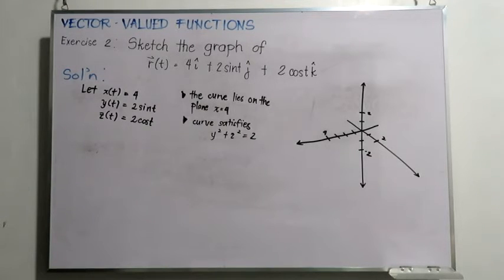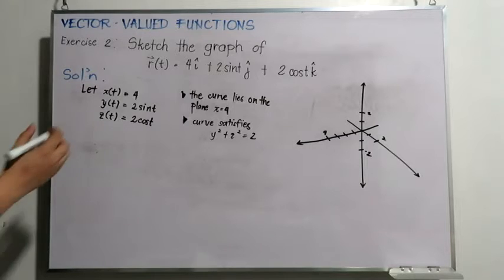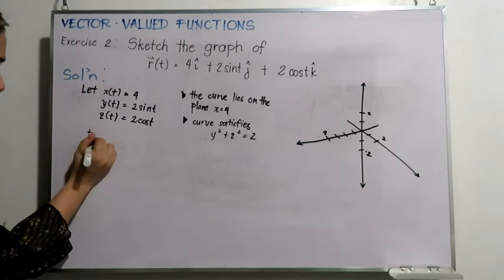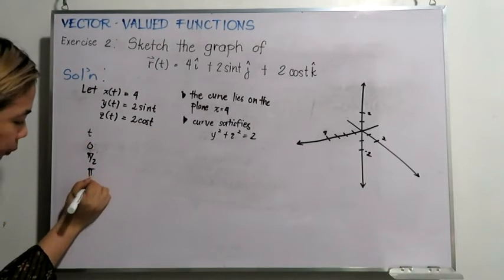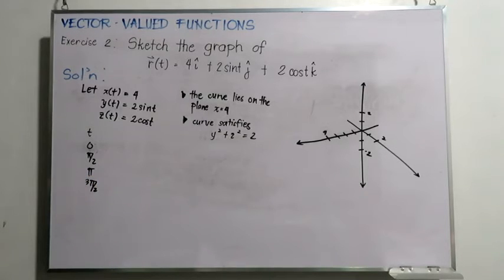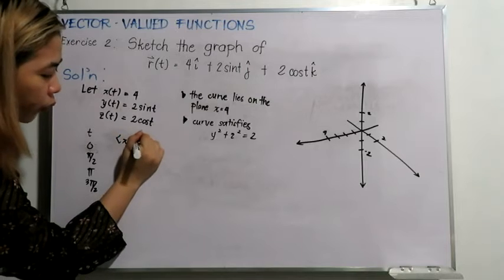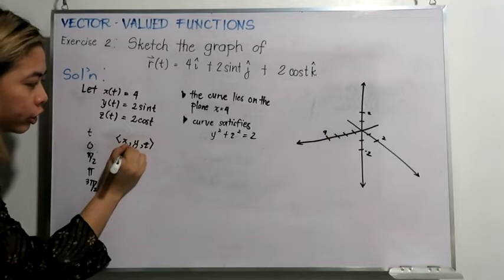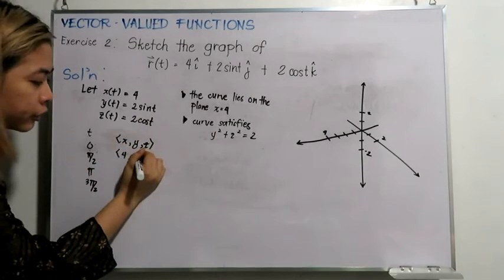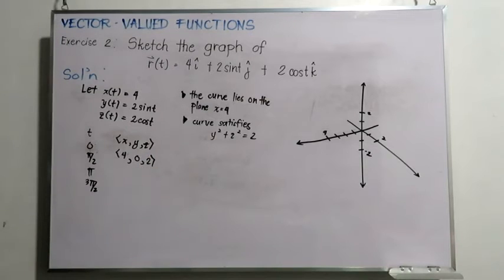Let us get some sample points for when t is equal to 0, pi over 2, pi, and 3 pi over 2 since we are expecting a circle. When t is equal to 0, substituting into our parametric equations, we will get (x, y, z) equal to (4, 0, 2). For the rest of the values, please verify that we will obtain the following results.